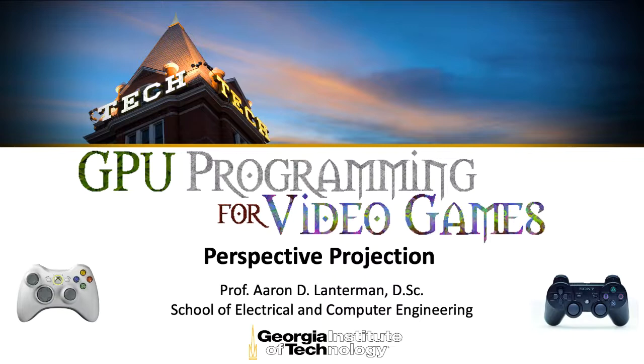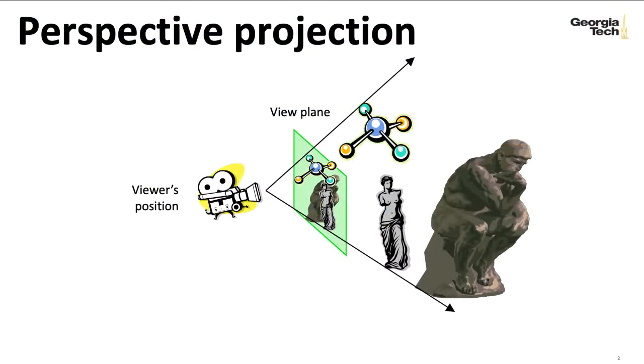In the last lecture, we talked about orthographic projection, and in this lecture, we'll talk about perspective projection. In orthographic projection, objects would appear the same size regardless of the distance from the camera. With perspective projection, things that are closer to you are going to look bigger than things that are further away from you.